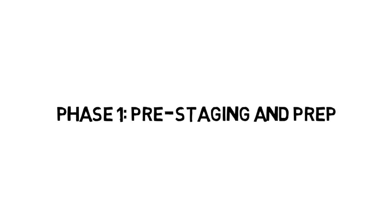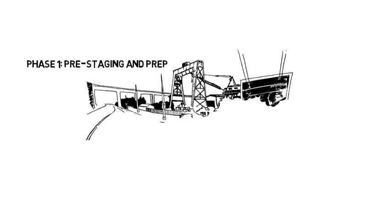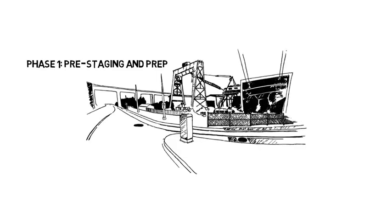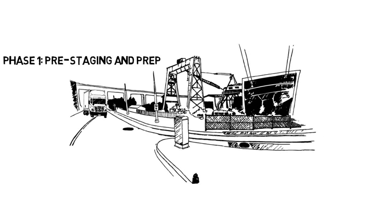Phase 1 is known as pre-staging and prep work. Beginning in April and lasting until June, you will see a lot of action at the upper and lower terminals preparing for the five-week closure. Don't worry, the tram will be running normal hours until June 23.